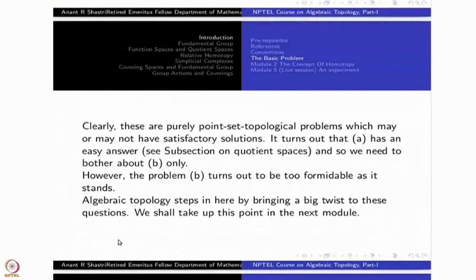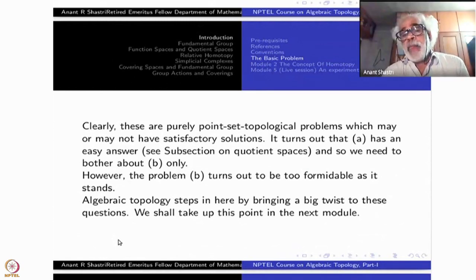Algebraic topology steps in here by bringing a big twist to these questions which we shall take in the next module. These questions again we will discuss but with a twist, namely what is algebraic topology going to do? This is a point-set topological problem. Given a subset and a function and a larger space, can you extend the function to the whole space and so on? It is just a point-set topological problem. What is algebraic topology, that we will discuss in the next section. Thank you.